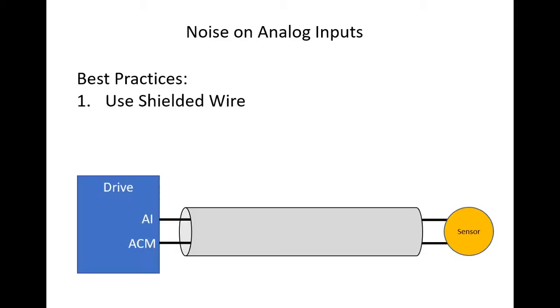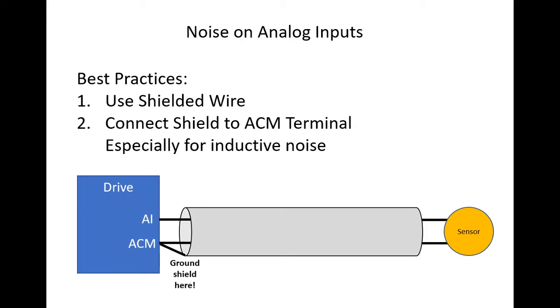Analog inputs can easily be affected by noise. The best practices are: use shielded wire, connect the shield to the ACM terminal, especially if the noise is from an inductive source. Grounding the shield at the drive end is all you need. Don't ground the other end of the shield because you can create a current loop that will just create more noise.